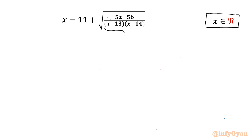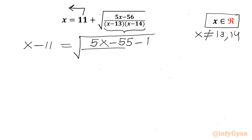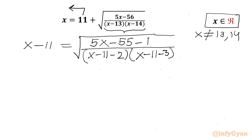Let us get started by writing our denominator cannot be 0. So x cannot be 13 and x cannot be 14. Now let us take this 11 to the LHS. So I can write x minus 11 equal to square root of (5x minus 56), where I will split 56 as 55 and 1, giving negative 55 and negative 1. The denominator factors as (x minus 13)(x minus 14).